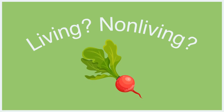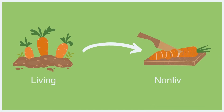It can be challenging to identify things as living or nonliving because many living things do not exhibit all characteristics of a living thing during all stages of life. In addition, some things were living but are now not living. For example, vegetables are living prior to being harvested, but after harvest they are no longer living.